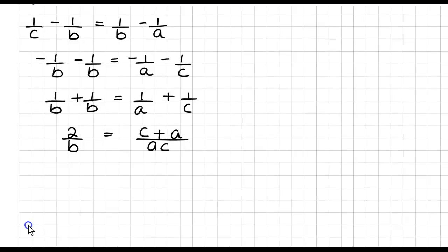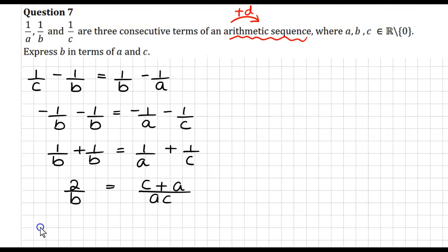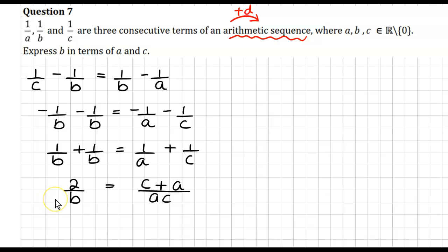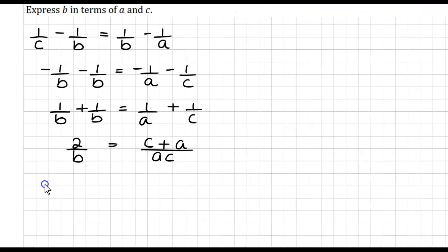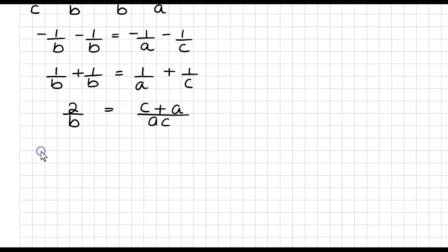Now, the fact that b, it says express b in terms of a and c, so b cannot be on the denominator, it cannot be on the bottom. So what we'll do is, we'll multiply, because this ac is divided, we'll multiply that by the 2, and because the b is divided, we'll multiply that by the c plus a.